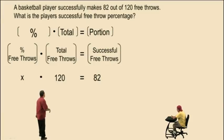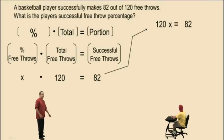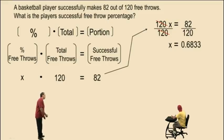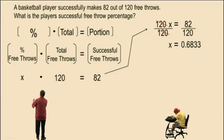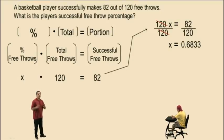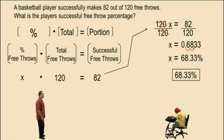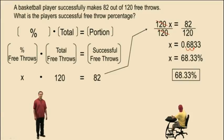Now we have our equation: x times 120 is the same as 120x, and that equals 82. All we have to do is solve for x. We divide both sides by 120. Charlie, what's 82 divided by 120, rounded to the nearest ten-thousandths? .6833. Very nice, Charlie. Remember, x represents a percent, so our answer has to be a percent, not a decimal. We convert that decimal to a percent by moving the decimal place two places to the right. Therefore, our final answer is 68.33%. What is the player's successful free throw percentage? Our answer is 68.33%.